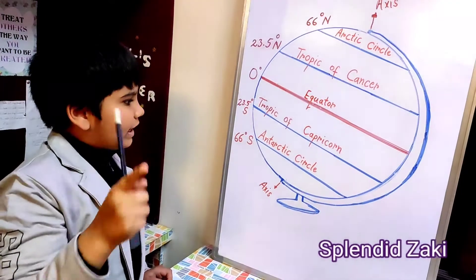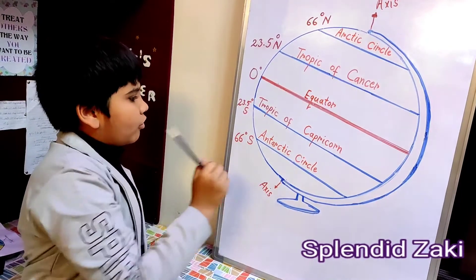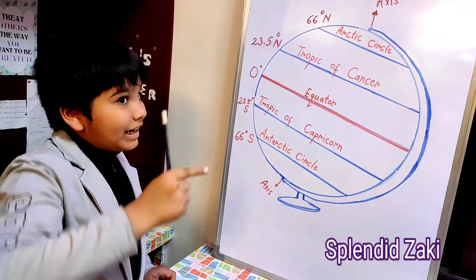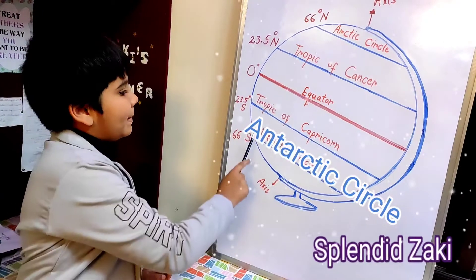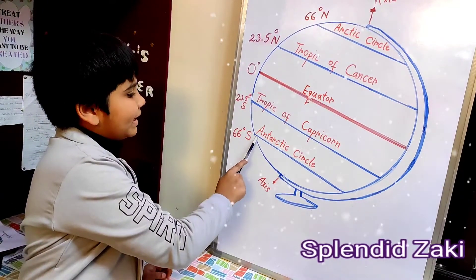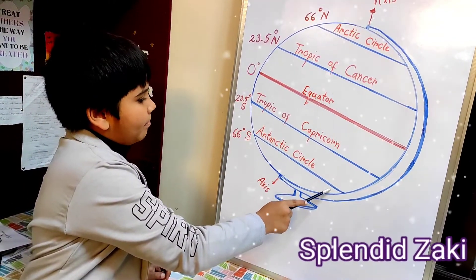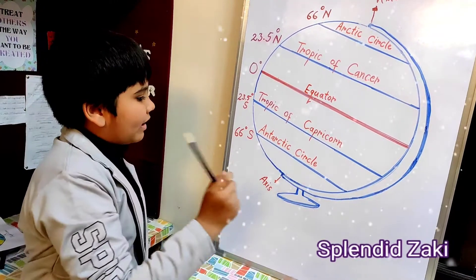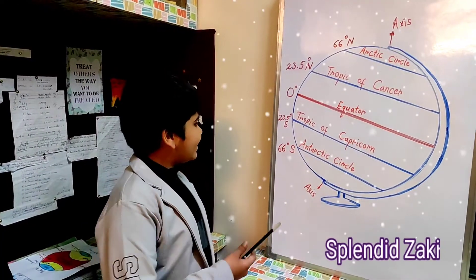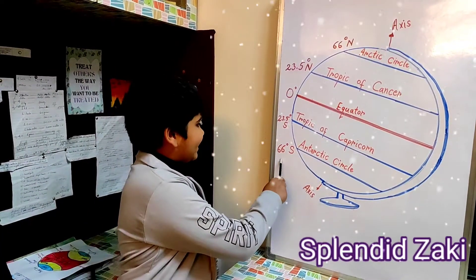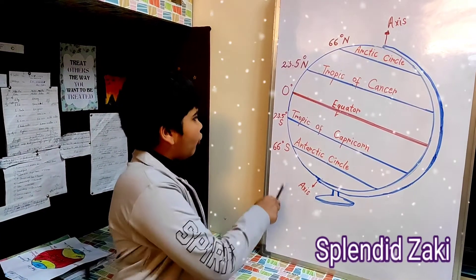Now, let us move to the next imaginary line called the Antarctic Circle. This is the Antarctic Circle. It surrounds the South Pole. It marks 66 degrees south on the globe.